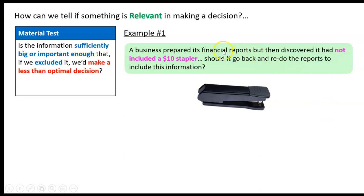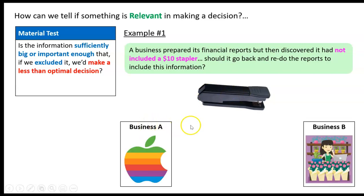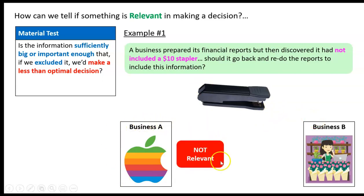Example number one: a business prepared its financial reports but then discovered it had not included a $10 stapler. Should it go back and redo those reports, or can we leave the stapler out? Is it relevant? Let's look at two different businesses. Business A is Apple, a multi-billion dollar company. For Apple, this is not relevant — we don't need to go back and redo our financial reports because this stapler was missing. We're not going to make any better or worse decisions because of that.